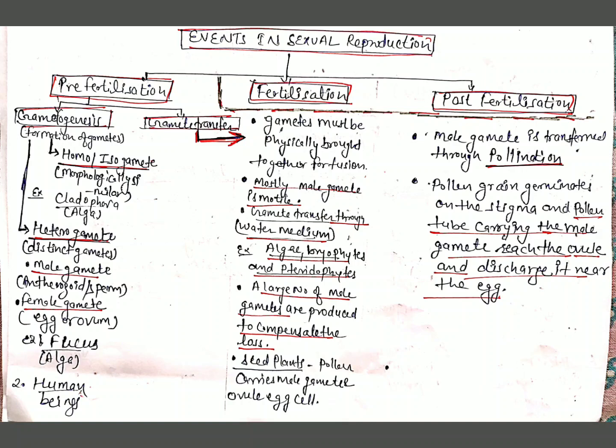Male gametes are transferred through pollination — pollen is transferred from the anthers to the stigma. Pollen grains germinate on the stigma, and the pollen tubes carrying the male gametes reach the ovule and discharge the male gametes near the egg cell.